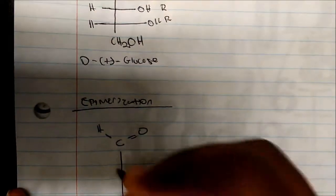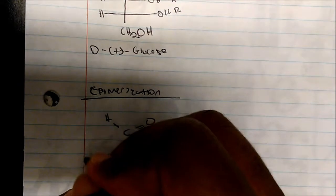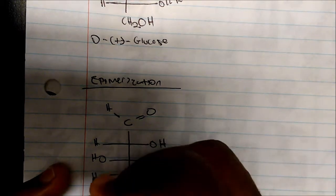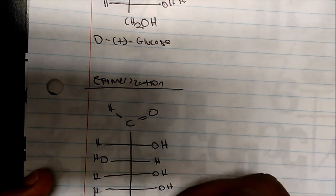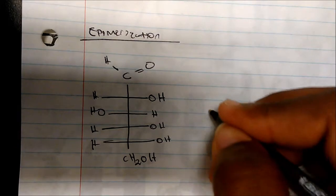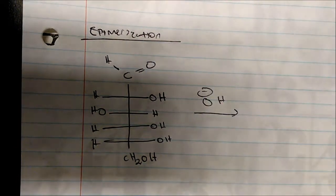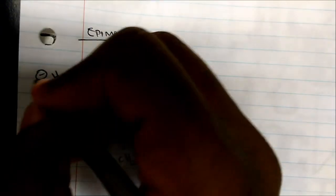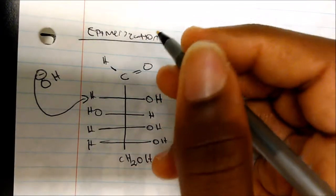If we take glucose — with its R, S, R, R chirocenters and its CH₂OH — and add it in base using hydroxide, let's look at the reaction mechanism. Right adjacent to the aldehyde group, the hydroxide will come in and deprotonate the hydrogen.